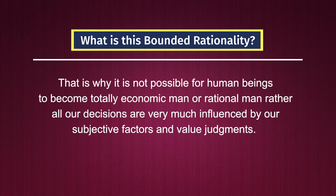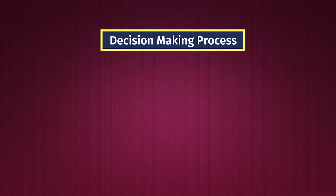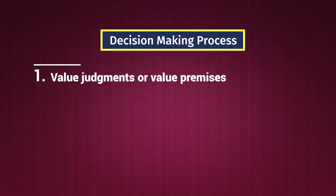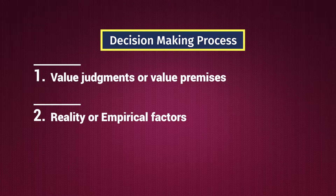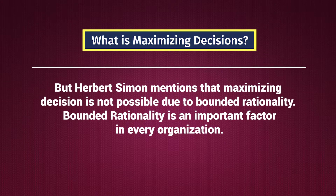Rather, all our decisions are very much influenced by subjective factors and value judgments. That is why Herbert Simon mentioned that our decision making process is generally influenced by two types of factors: one, value judgments or value premises, and second, the reality or empirical factors. So bounded rationality leads to a transformation in decision making — a shift from maximizing decisions to satisfying decisions. According to classical thinkers, we always try to maximize our choices, but Herbert Simon mentioned that maximizing decisions are not possible due to bounded rationality.